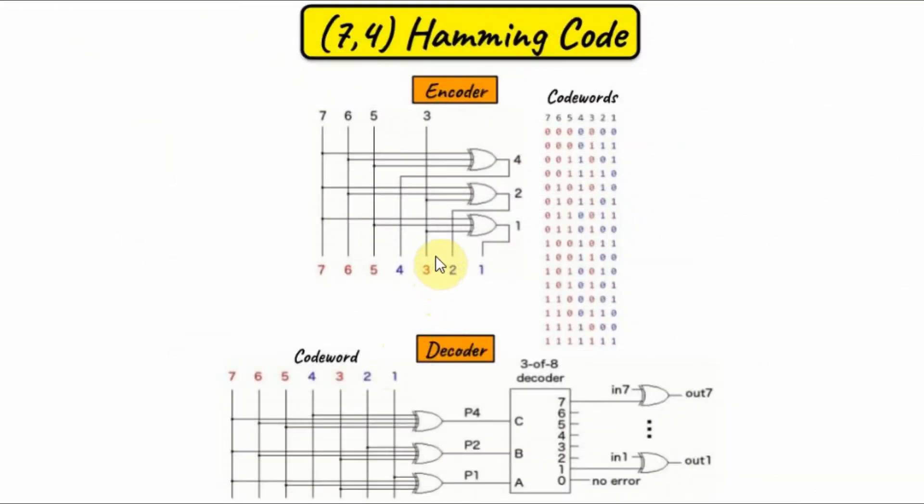Let's have a look at the encoder-decoder circuitry of the 7-4 Hamming code. The encoder circuitry is basically made of exclusive or logic, where the input is the 4-bit message, generating the 3-parity bits, which are added to the message, thus creating the 7-bit codeword.